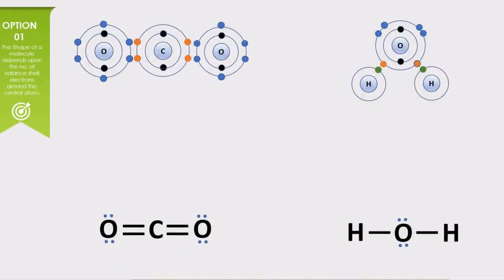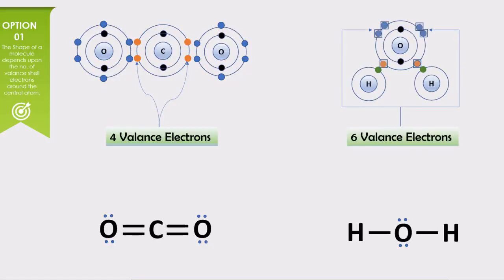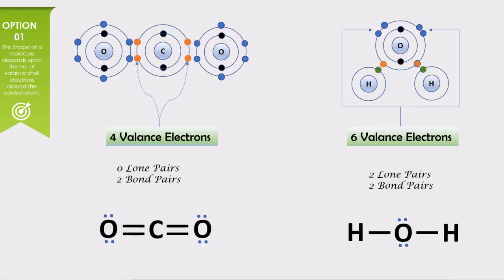For the first point, we can take carbon dioxide and water as examples. In carbon dioxide, the central atom is carbon and it has four valence shell electrons. In the CO2 molecule, the valence shell electrons in carbon are all bonded with oxygen, and thus they are called bond pairs. That is why CO2 has zero lone pairs and two bond pairs. But in oxygen of the water molecule, two electrons are bonded with the two hydrogen atoms, but two pairs of electrons are available — that is why water has two lone pairs and two bond pairs.